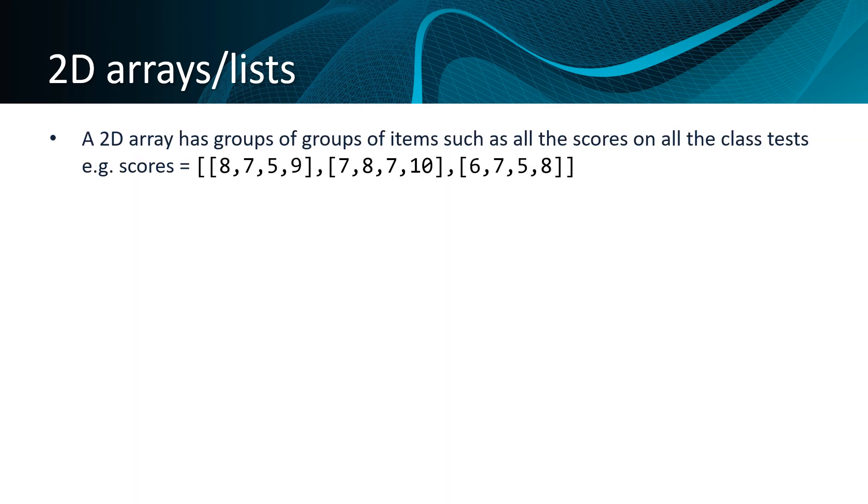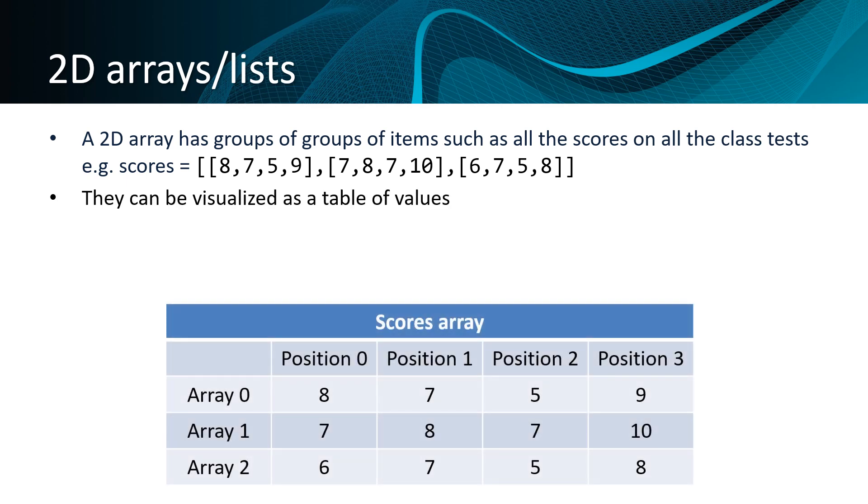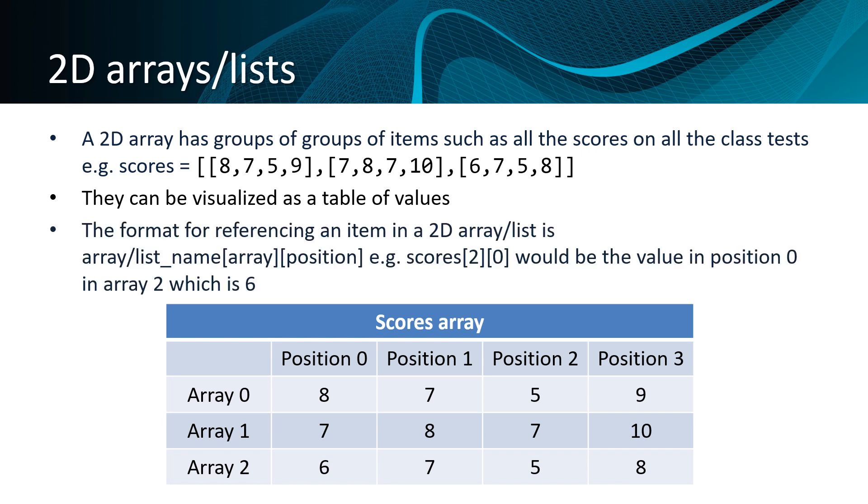A 2D array has groups of groups of items, such as all the scores on all the class tests. Essentially, we're talking about an array of arrays. Here, in our example, we have scores, and each member of scores is now an array with the scores for one particular test for each of our four students. A 2D array can be visualized as a table of values. The format for referencing an item in a 2D array or list is the array or list name, and in the first set of square brackets, we say which array we would like to reference. In the second set of square brackets, we say which position we would like to reference. So scores[2][0] would be telling us to look in array 2 and position 0 of array 2, which, as you can see, has the value 6.